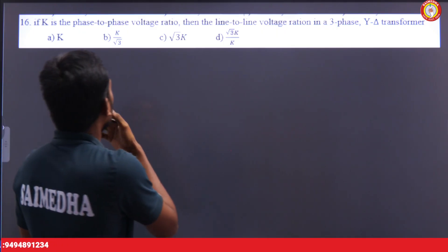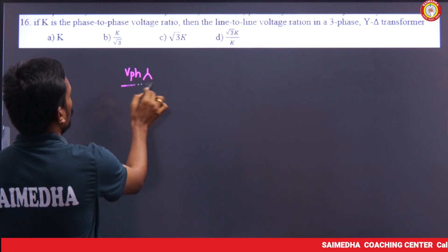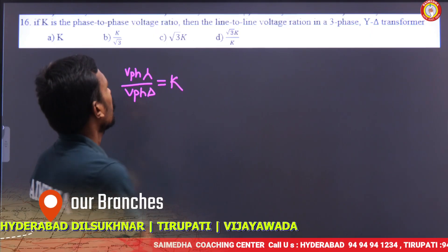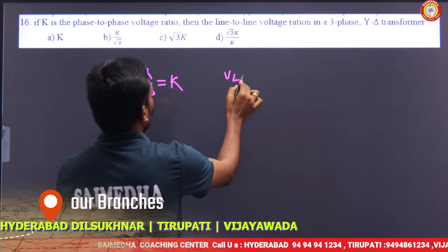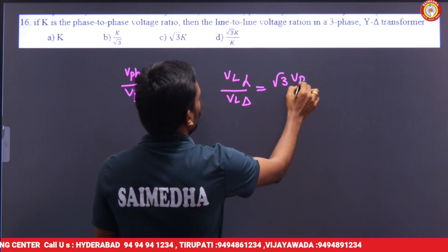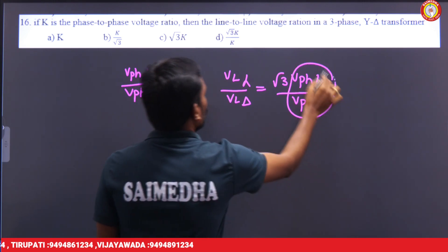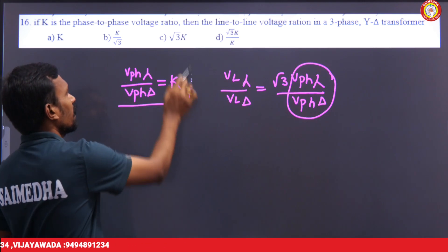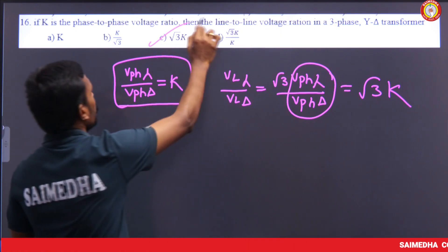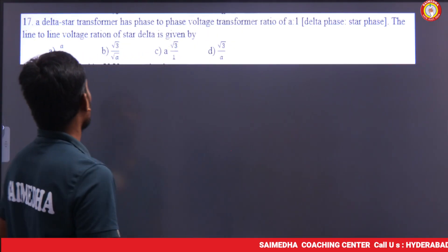If k is the phase-to-phase voltage ratio of a star-delta transformer, the line-to-line voltage ratio is asked. In a star connection, line voltage equals root 3 times phase voltage; in delta, line voltage equals phase voltage. So the line-to-line voltage ratio for star-delta is root 3 times k.